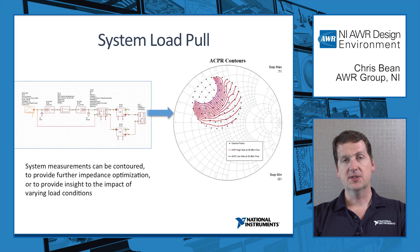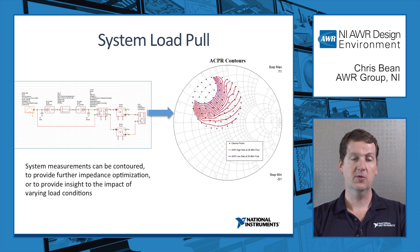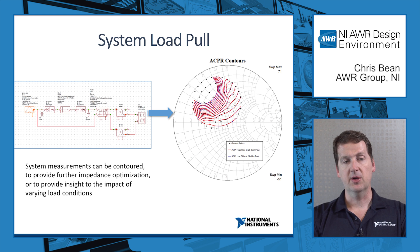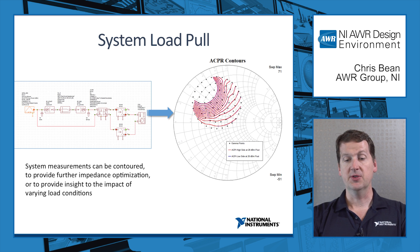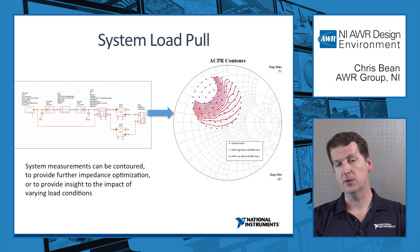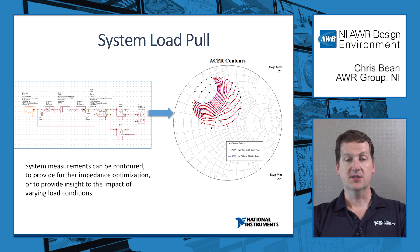Going to system load pull — this is something that's in beta right now; we'll be introducing it in version 13 of our software, fully released later this year. It uses VSS, that's our system tool, and it's fully integrated in Microwave Office. What we can do is apply a modulated signal — here we're showing a QPSK signal, but it could be a very sophisticated signal, like an LTE test model or 5G signal. And then we can plot system level contours instead of just circuit level.